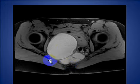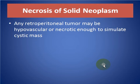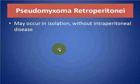Tailgut cyst necrosis of solid neoplasm: any retroperitoneal tumor may be hypovascular or necrotic enough to simulate a cystic mass lesion. Pseudomyxoma retroperitonei may occur in isolation without intraperitoneal disease.